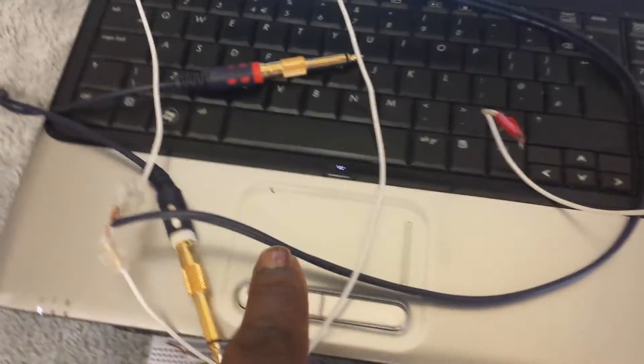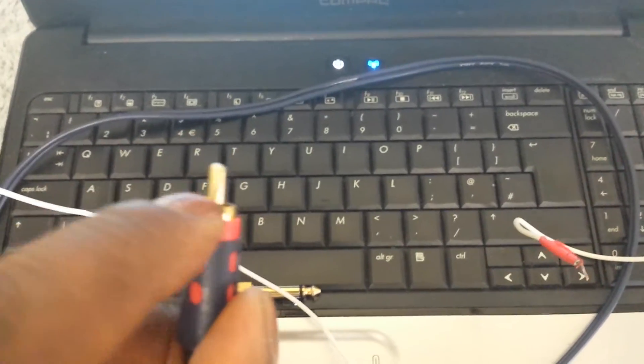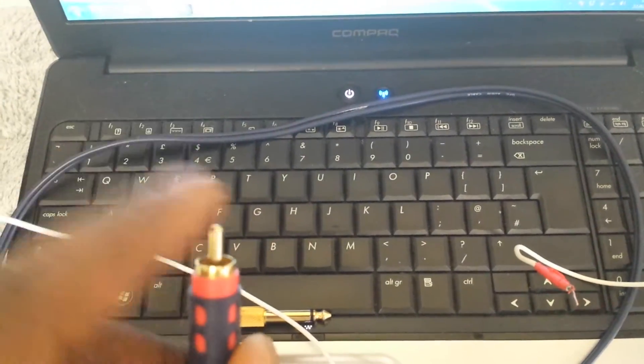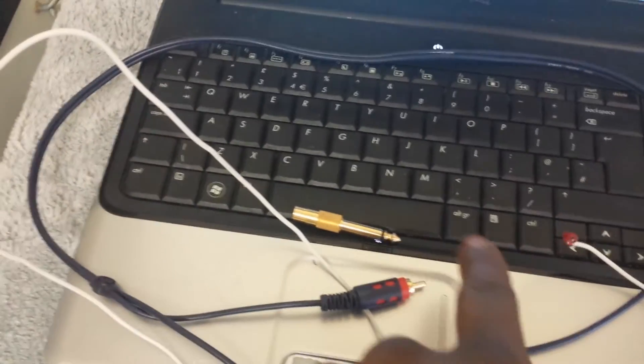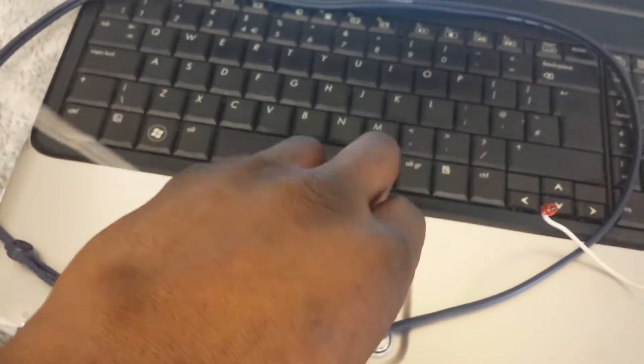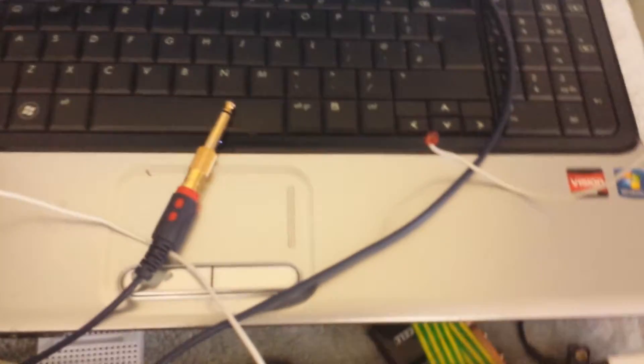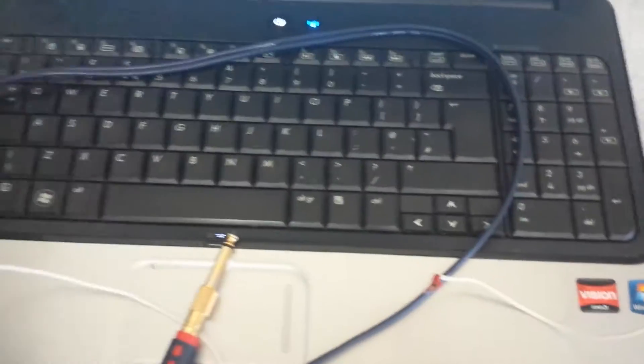What we want to try and do is test for our continuity. Now the outer sheathing is always the earth side and the inner part is going to be our positive hot side. So we can just do a continuity test from one side and make sure we've got when we hook this up, we make sure we've got continuity going throughout. So we can take these RCA jacks plug it into the front and then we can take that into the front of our audio interface.